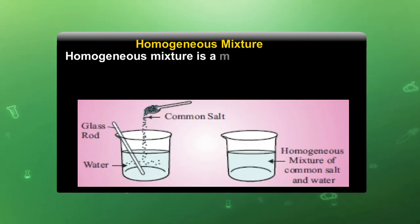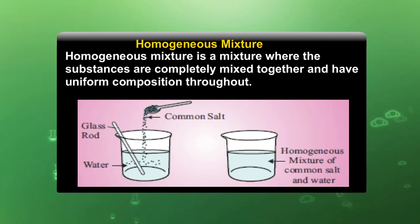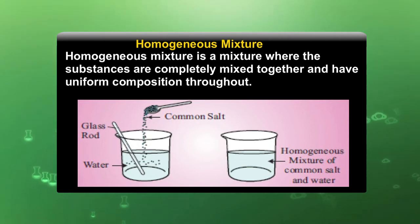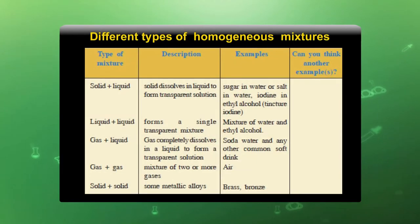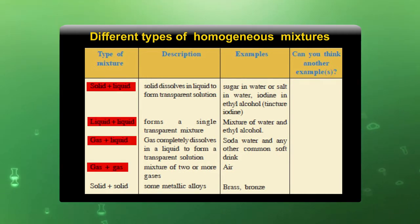A homogeneous mixture is one where substances are completely mixed together and have uniform composition throughout. For example, if you dissolve sugar or salt in water, after complete dissolution you are unable to distinguish where the sugar particles are and where the water particles are. A solution in which we cannot distinguish the two components is known as a homogeneous mixture. The table here shows different types of homogeneous mixtures — solid-liquid, liquid-liquid, gas-liquid, gas-gas, and solid-solid combinations.